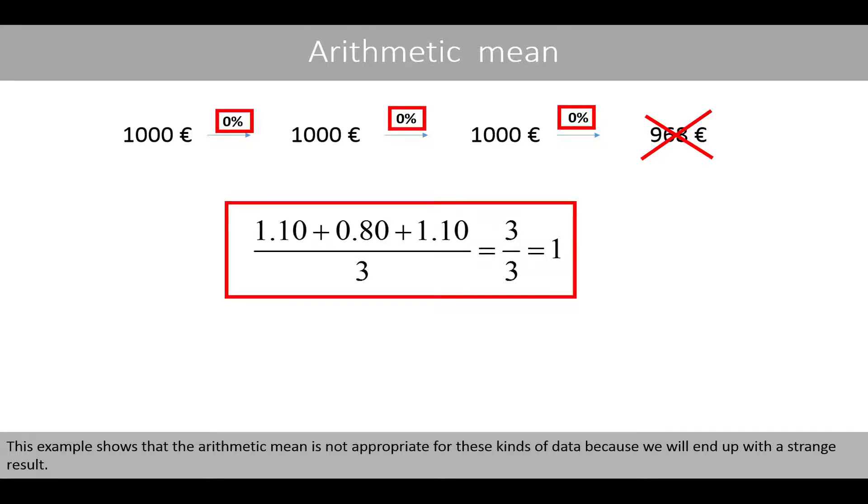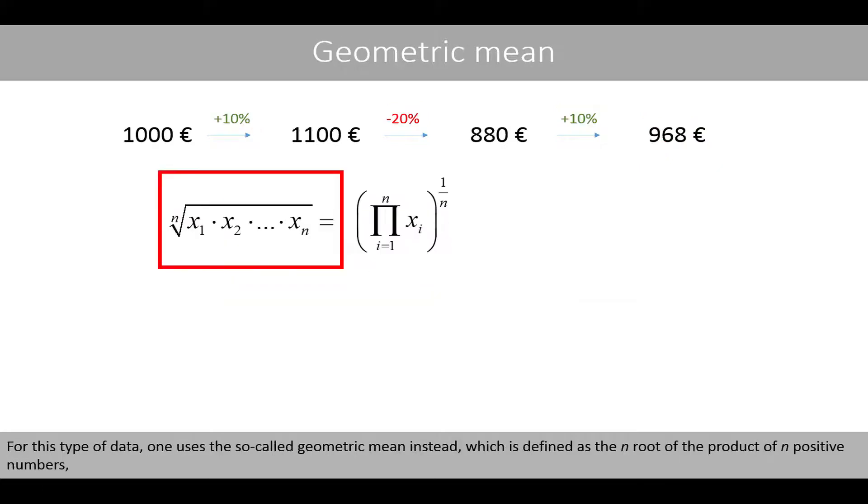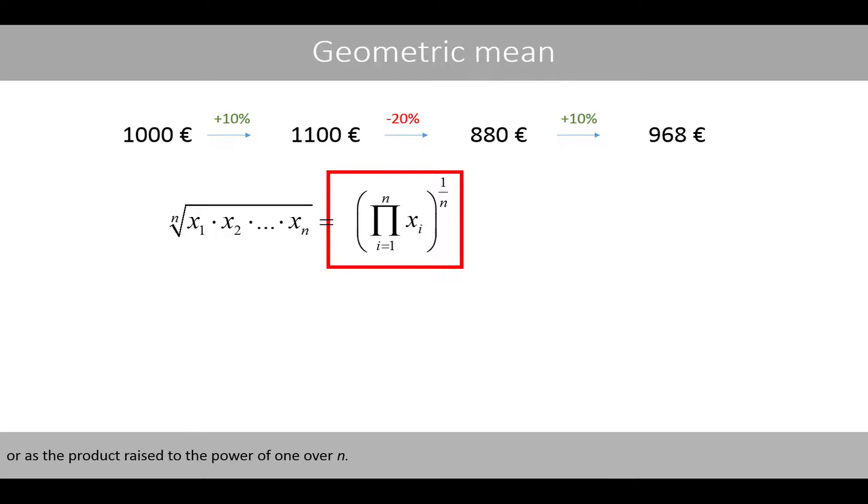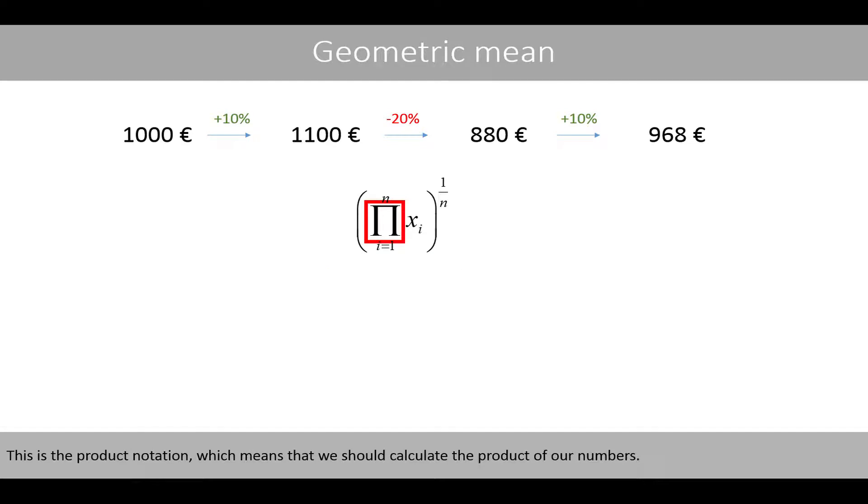This example shows that the arithmetic mean is not appropriate for these kinds of data, because we will end up with a strange result. For this type of data, one uses the so-called geometric mean instead, which is defined as the n root of the product of n positive numbers, or as the product raised to the power of 1 over n. This is the product notation, which means that we should calculate the product of our numbers. In our example, we have three numbers, which means that n is equal to 3.